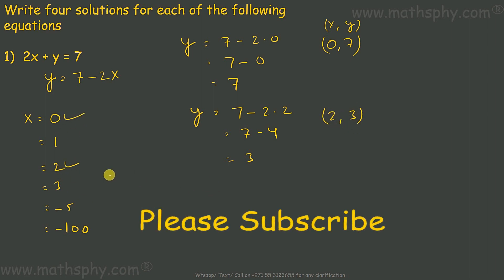I've taken 0, I've taken 2, let's take x as 3, so 7 minus 2 into 3, which gives you 7 minus 6, which is 1. So, x is 3, y is 1.